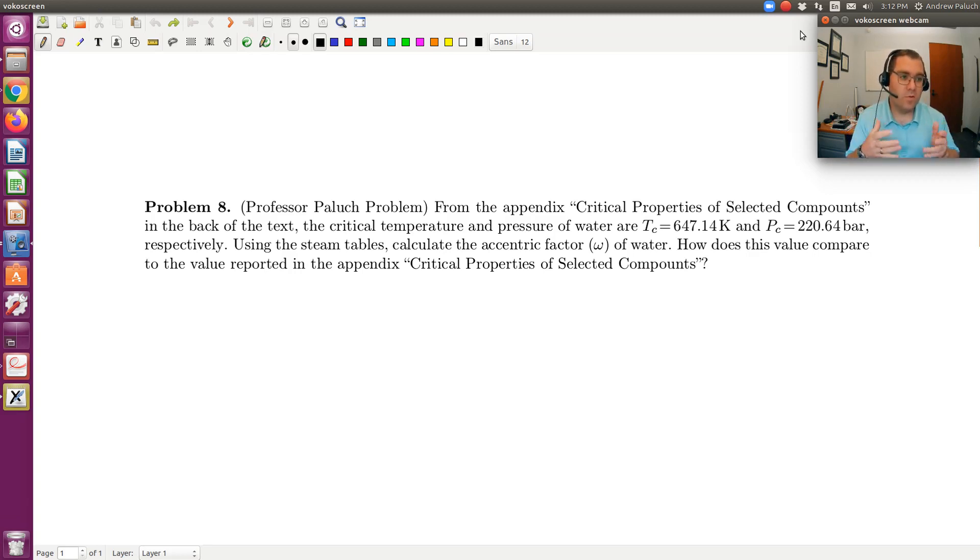All right, so ultimately when we go to use a cubic equation of state, we'll need to look up Tc, Pc, and omega for your fluid of interest. All of them are tabulated in Appendix A. Okay, so you have an idea already of what your critical properties are. Now I want to try and cement exactly what omega is.